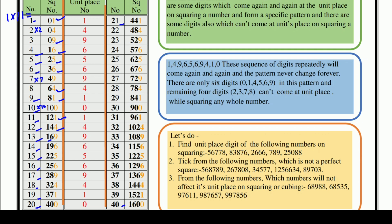If you look at all these squares, a pattern appears at the unit place. The unit place digits repeat: 1, 4, 9, 6, 5, 6, 9, 4, 1, 0 — and then the same sequence repeats again: 1, 4, 9, 6, 5, 6, 9, 4, 1, 0. This means that whatever number you square, its unit place digit will always follow this same sequence. You can see a pattern is being formed.